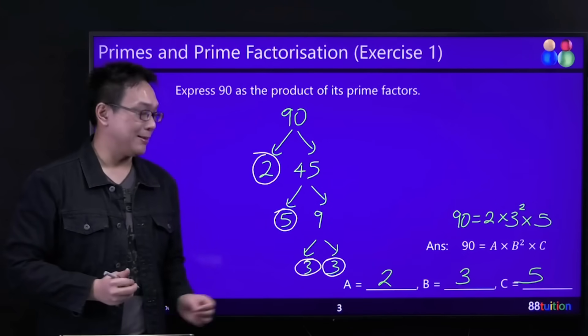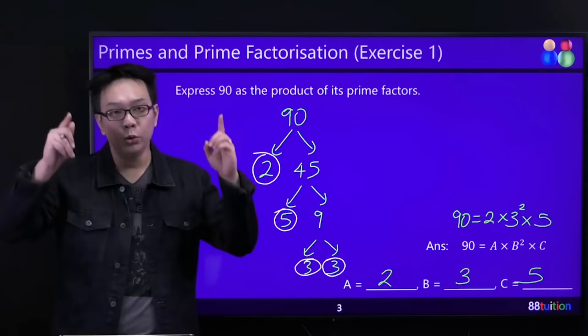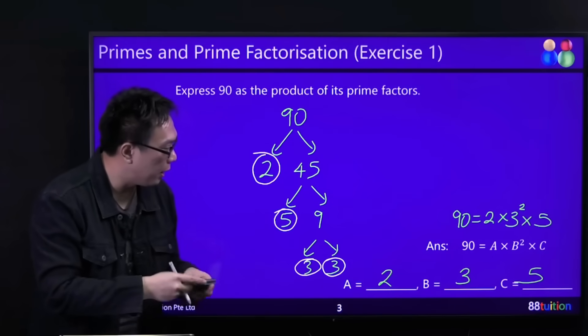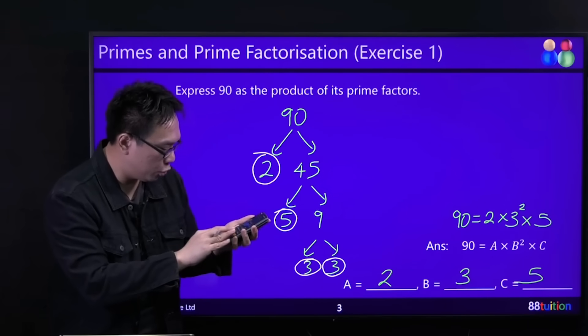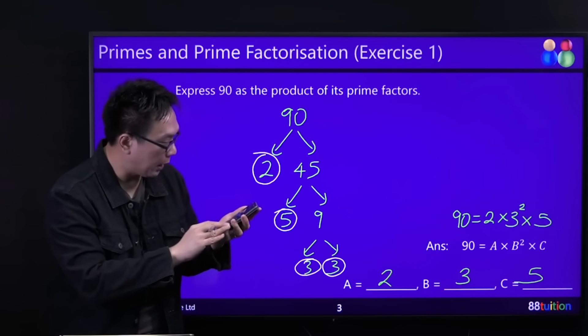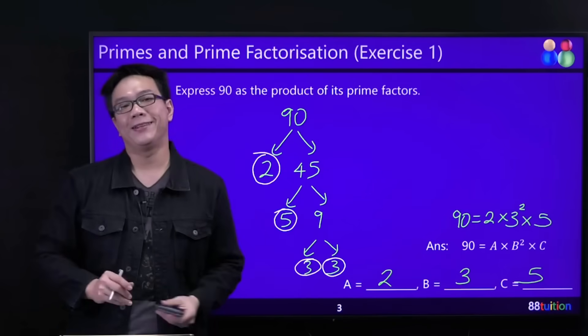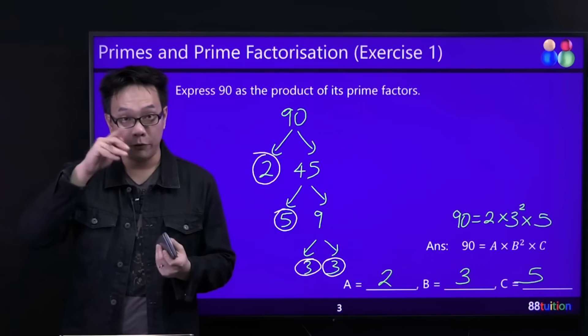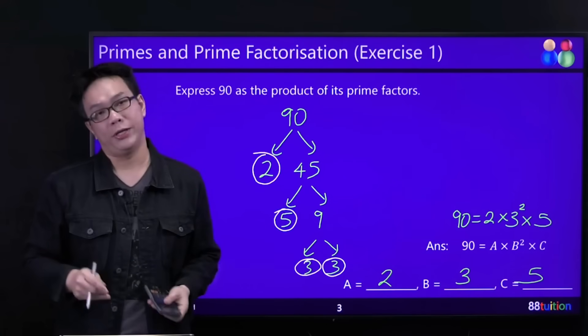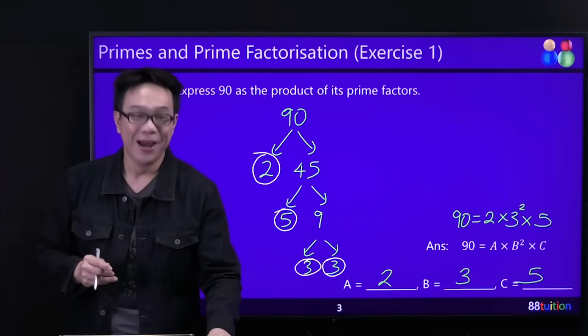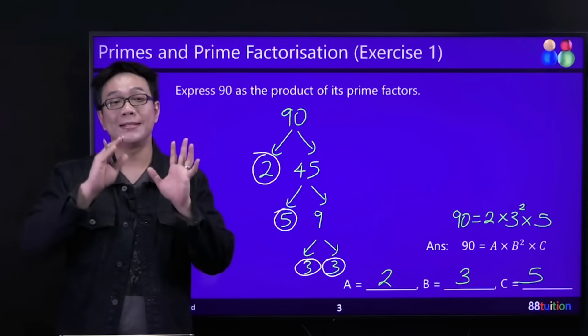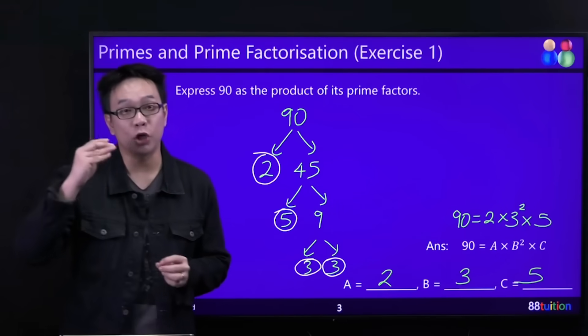And please, children, do a final check. Check what? Press your calculator: 2 times 3 square times 5 equals 90 - correct! Do you know where's the power? Where's the square? Go and look for it in your calculator. You should know where is the square and the square root, the cube and the cube root.